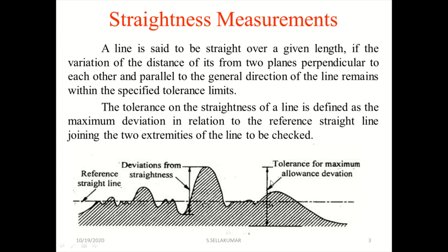This is the allowance deviations. This is the straightness. This is the reference line. This is the maximum limit, and then the limit will be used to check the straightness of the extremities.